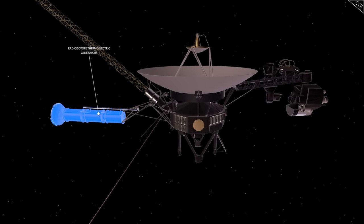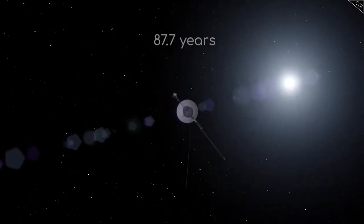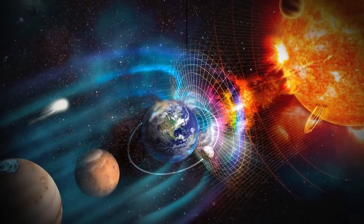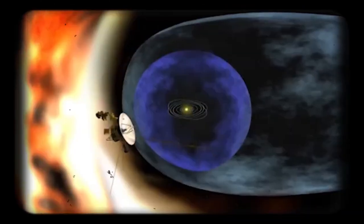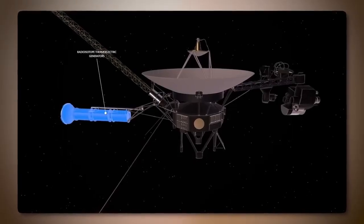This vast bubble, powered by the solar wind, extends roughly 11 billion miles from the Sun, encapsulating the Sun, all eight planets, and a significant portion of the solar system's outer regions.